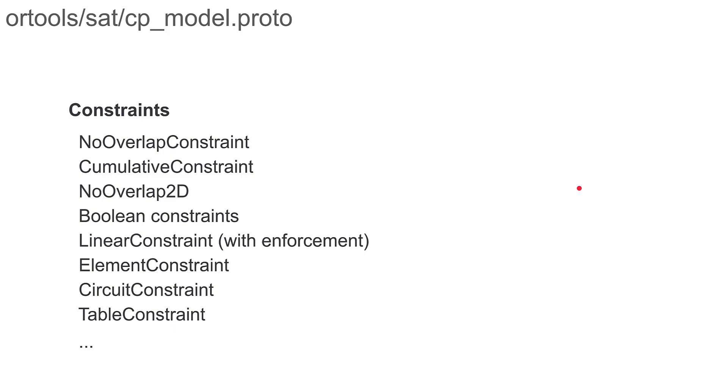You also have circuit constraints which are very useful in TSP-like problems that allow you to enforce your variables to form a closed loop. A table constraint where for some tuple of variables you enumerate what tuples of values are admissible, and many more. All of that allows you to model various problems like scheduling and routing with these native constraints, and we have dedicated propagators for all of these constraints that make the solving quite efficient.